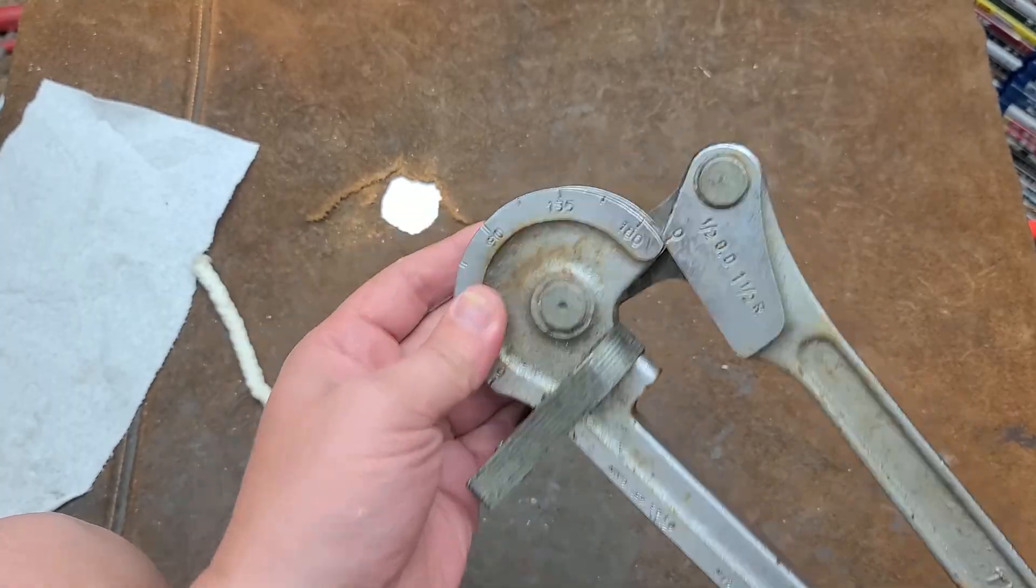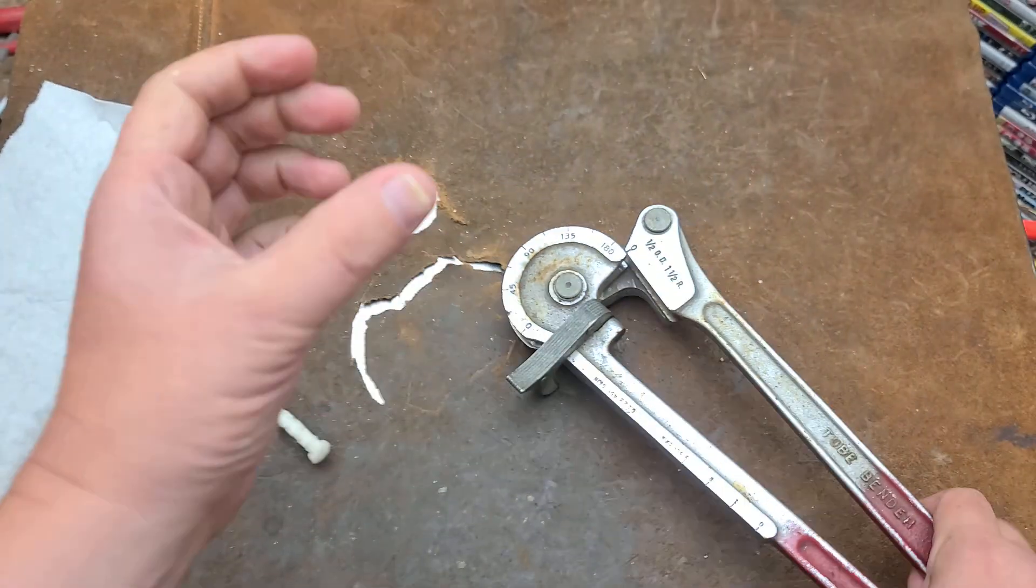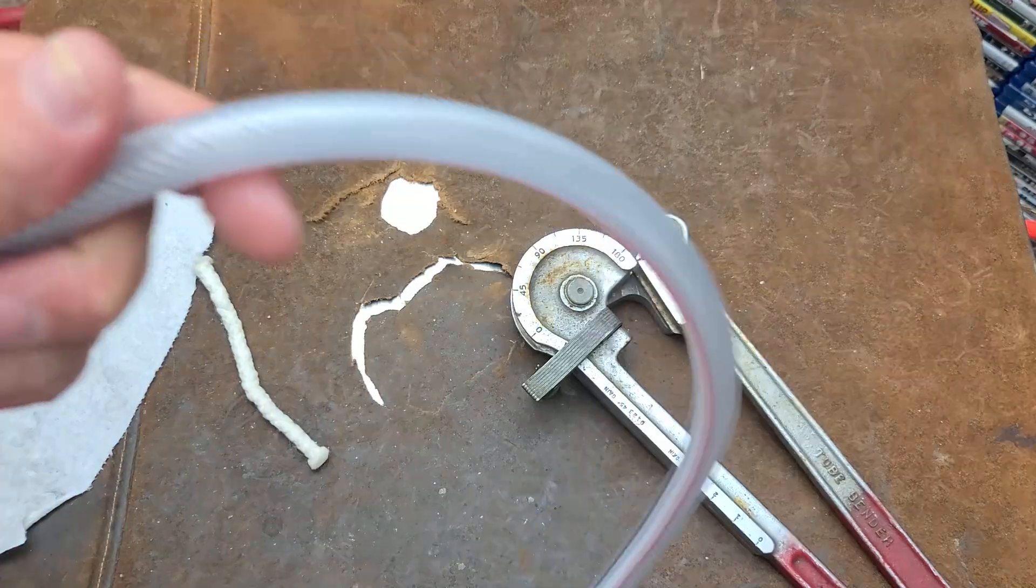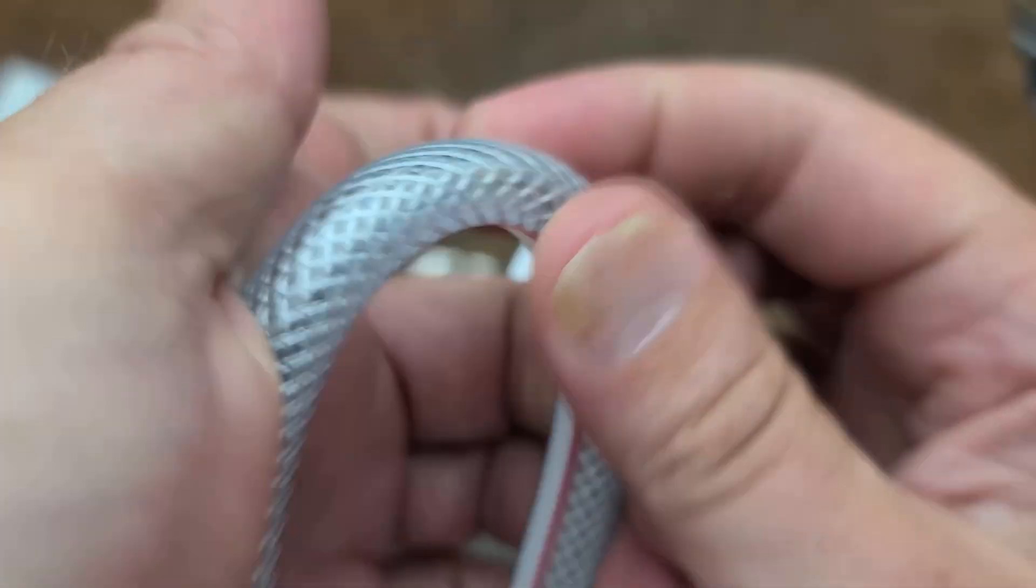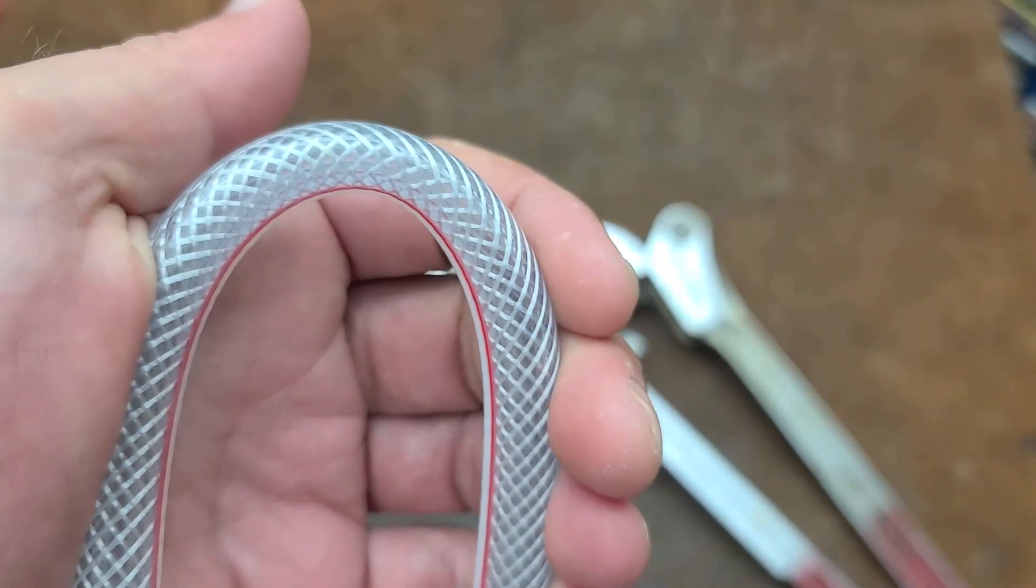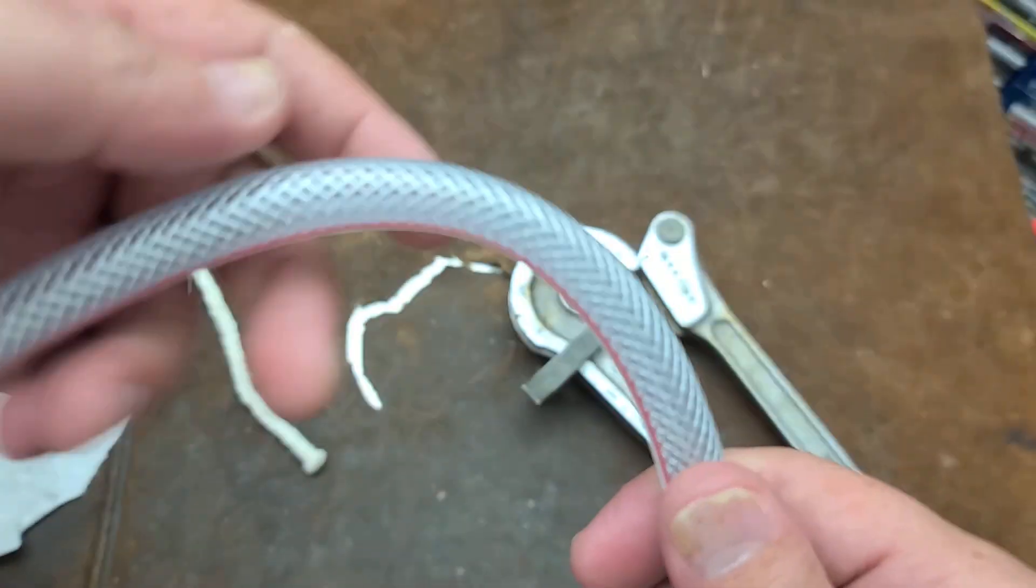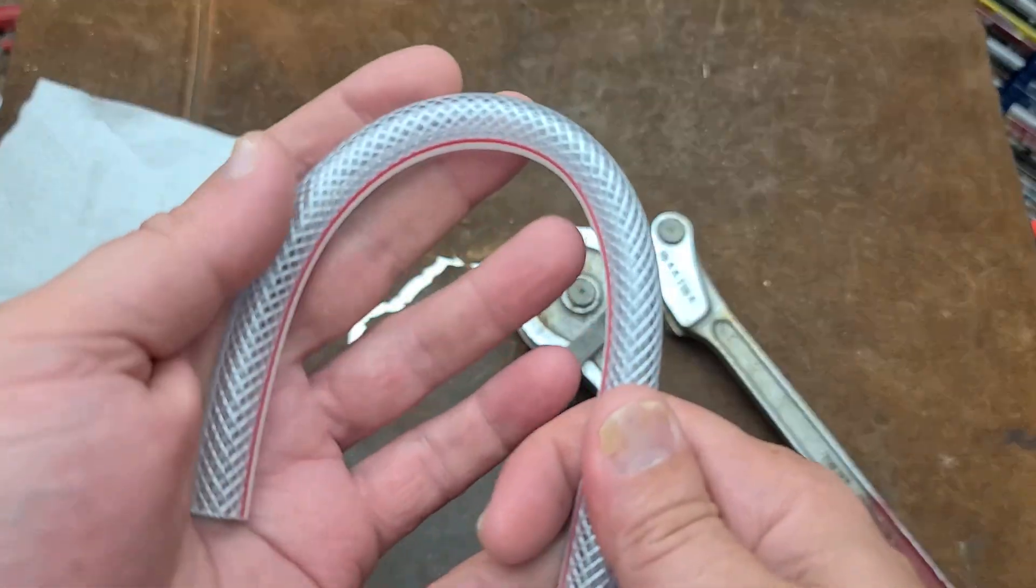A conduit bender is just an open end where you put in a piece of pipe or conduit and bend it over. As you bend something circular, the tube gets crimped and kinked.